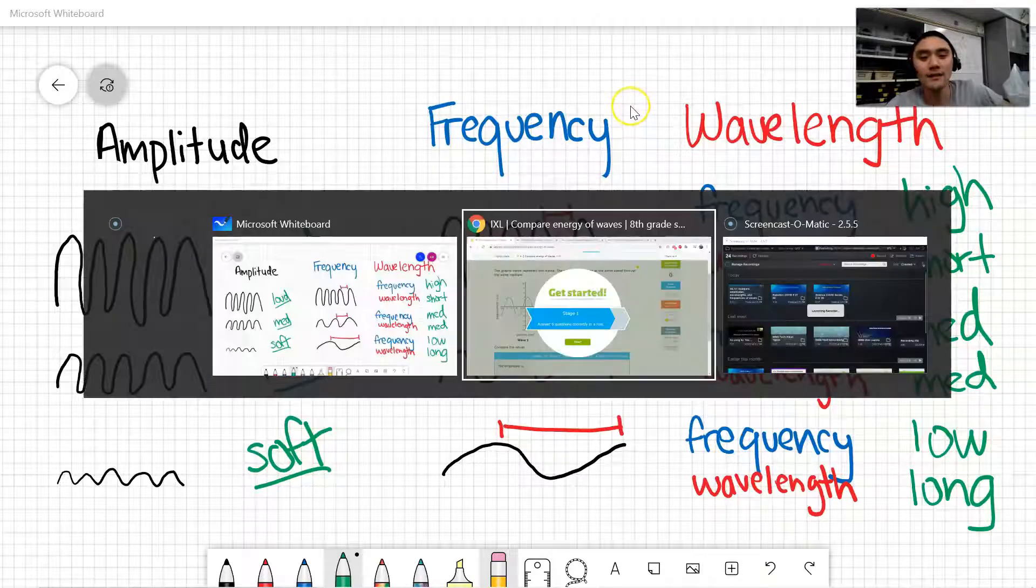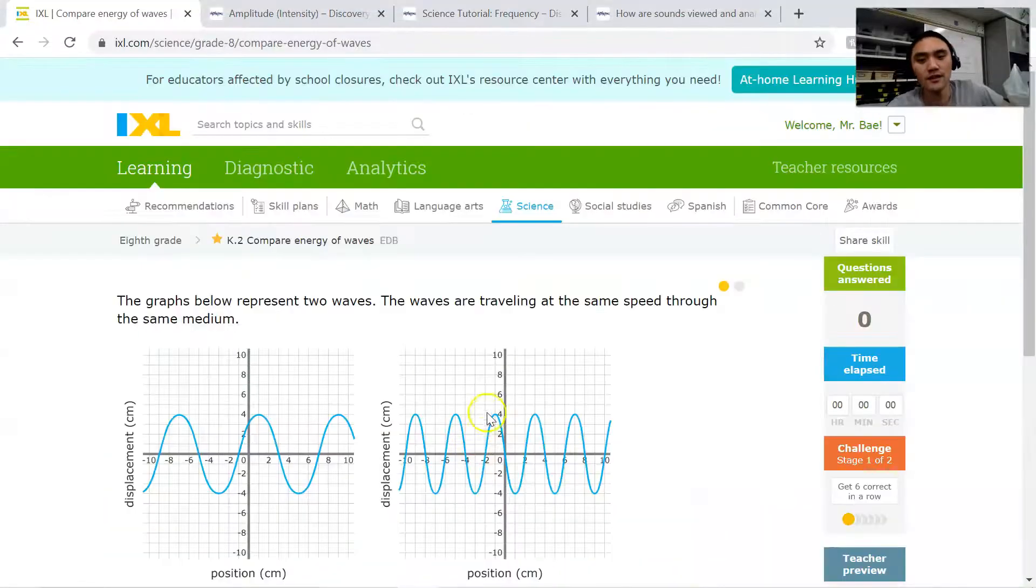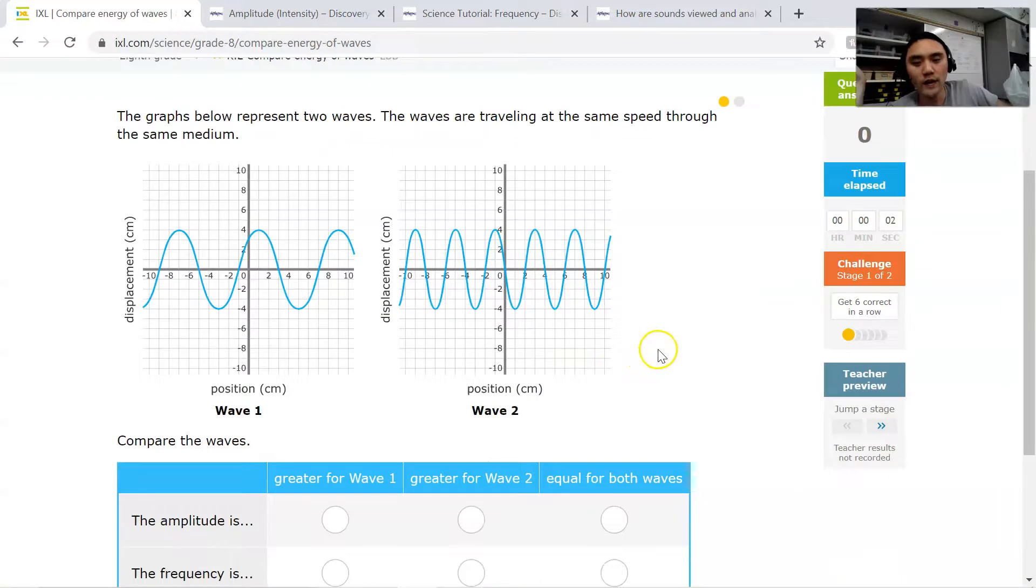Anyways, going back to IXL, let's do some things on K2. So here are some waves here. For the first one, it's asking about the amplitude and the frequency. So once again, amplitude is referring to the height. If you look carefully, the height here is at 4 and 4. The height here at the bottom is at 4 and 4. So the amplitude is the same. They're the same heights.